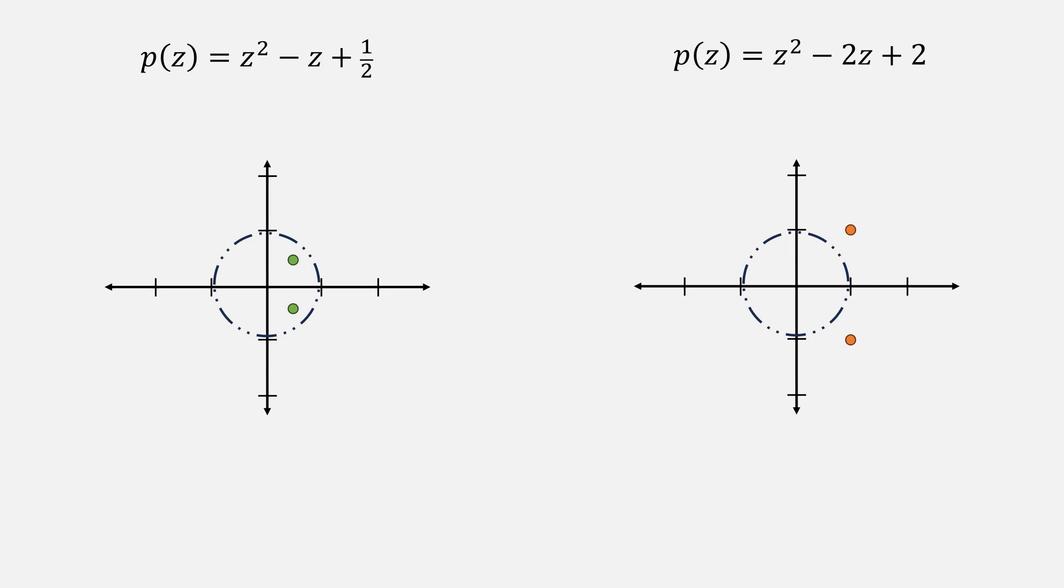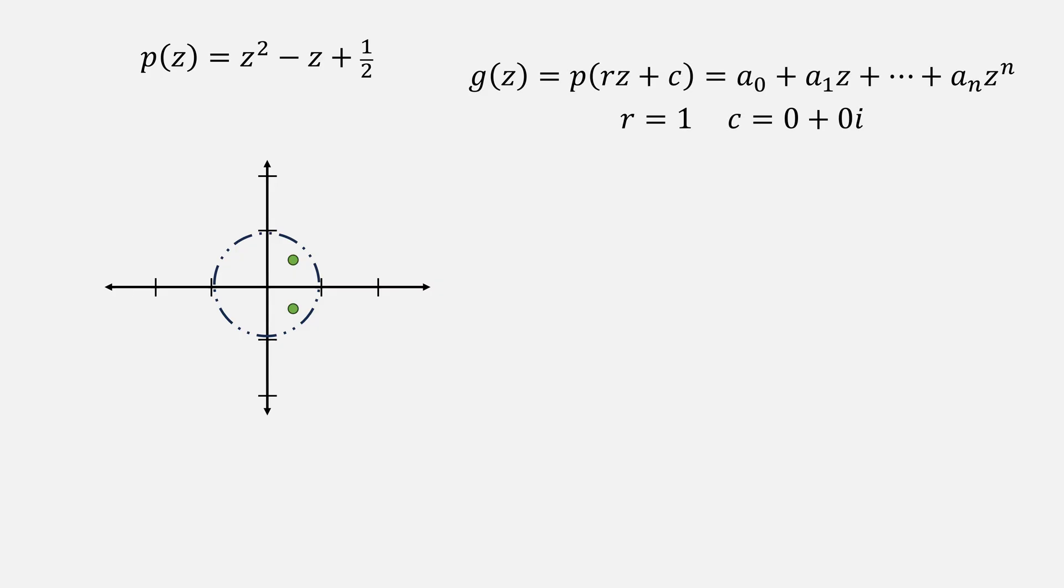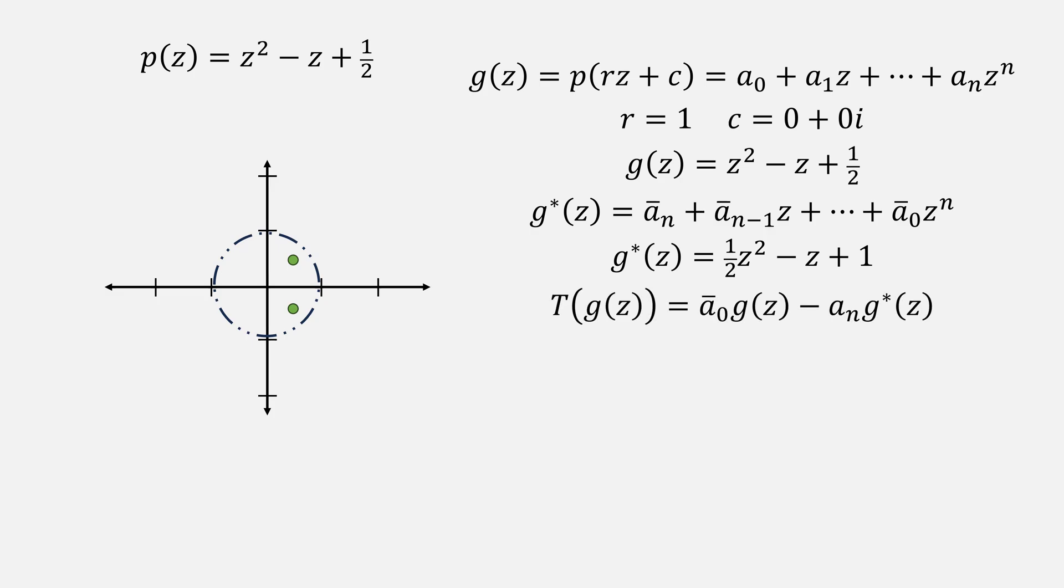Let's try to synthesize by looking at some examples. With our polynomial equation of z squared minus z plus a half, we plug that into our equation for g. Because we're using the radius of 1 and our center of 0, it's not going to change anything. g will just be our starting polynomial. g star is all of our coefficients reversed and in complex conjugate, which looks like this. Then we compute our t equation, plugging everything in giving a value of z over 2 minus 3 over 4. Plugging in 0, we get a negative number. This means it passed the test.